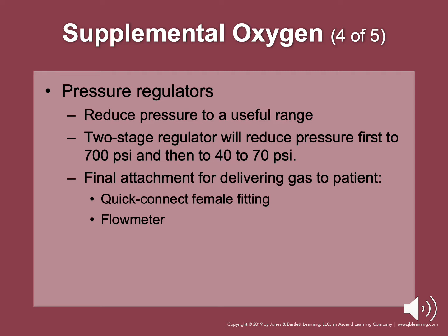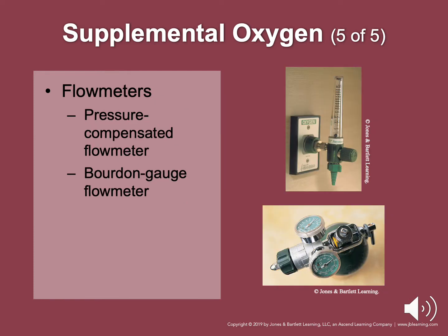The flow meter is a pressure-compensated flow meter. Two types are commonly used: the Bourdon gauge and the float ball flow meter. The float rises and falls according to gas flow within the tube and is affected by gravity. The Bourdon gauge flow meter is not affected by gravity and uses a pressure gauge to record the flow rate. Operational procedure: open the flow meter to the desired flow rate, confirm the flow rate, apply the oxygen device to the patient, monitor the patient's reaction, and disconnect the tubing and turn off the cylinder valve when oxygen therapy is complete.